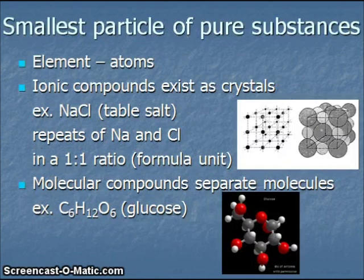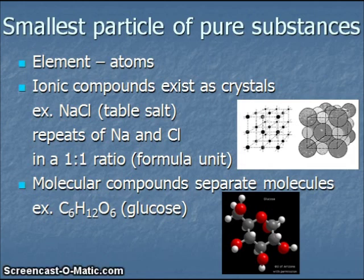A representative particle is the smallest particle of a pure substance. For elements, this is going to be an atom. For ionic compounds, which exist as crystals, we would refer to the representative particle as being a formula unit. For example, in salt, NaCl, which is table salt, we have repeats of sodium ions and chloride ions in a one-to-one ratio. We see that in this image with the smaller sodium ions and the larger chloride ions being found in a one-to-one ratio.